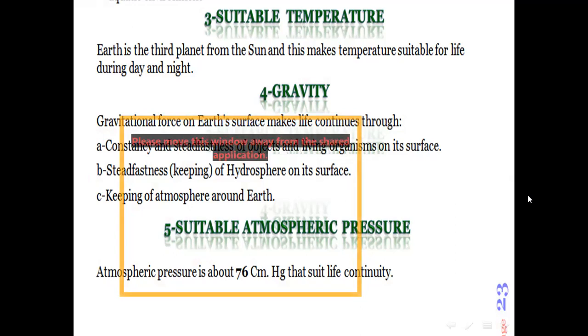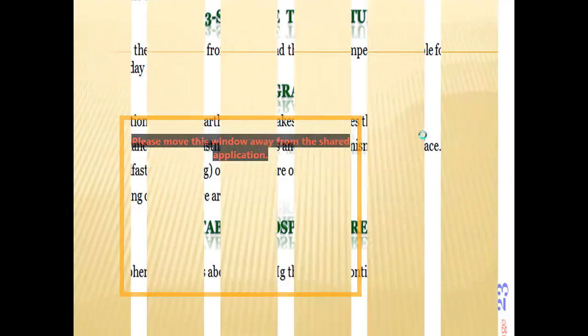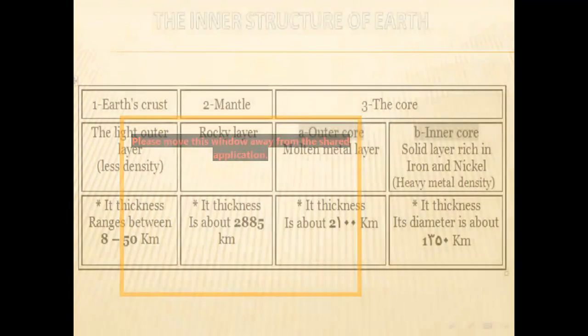Number five: suitable atmospheric pressure. The normal atmospheric pressure equals 76 centimeters of mercury. That keeps the life on planet Earth suitable to stay alive and continue our life on it.